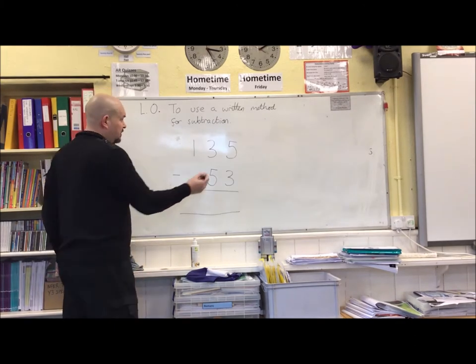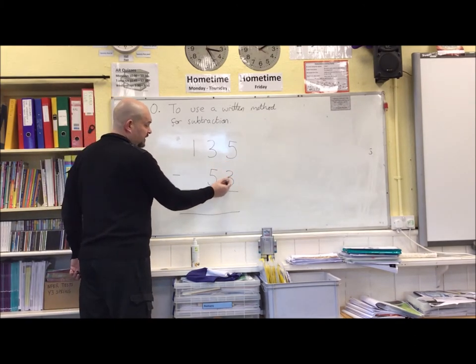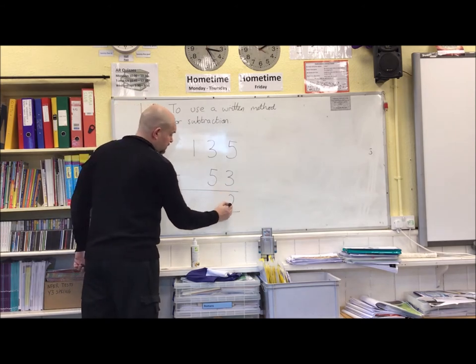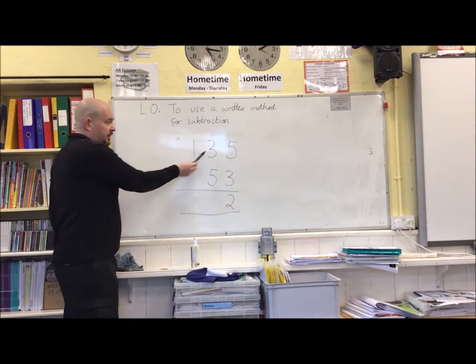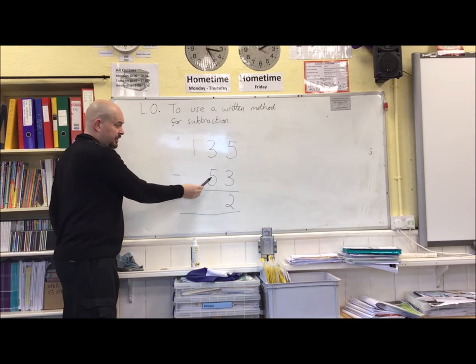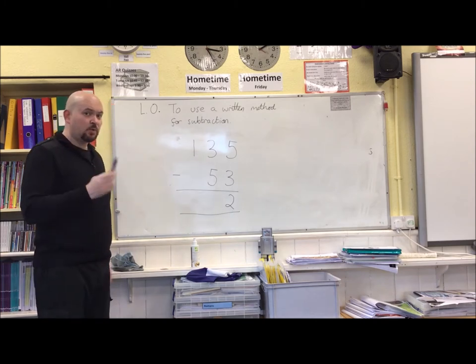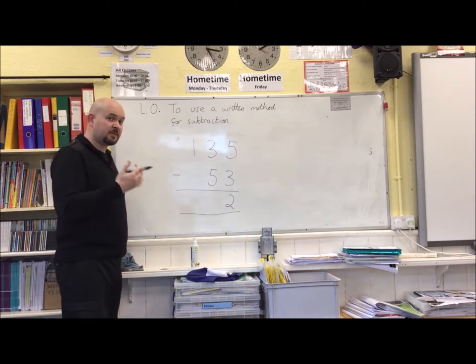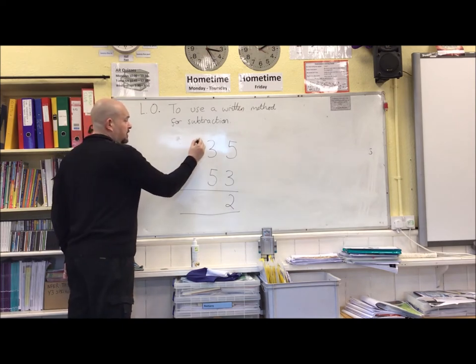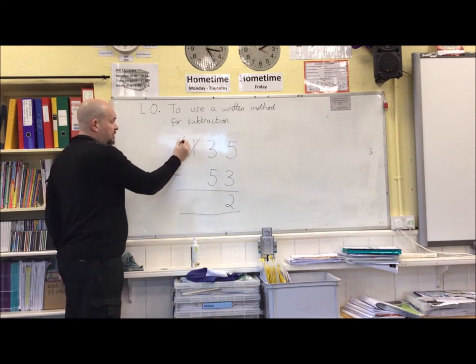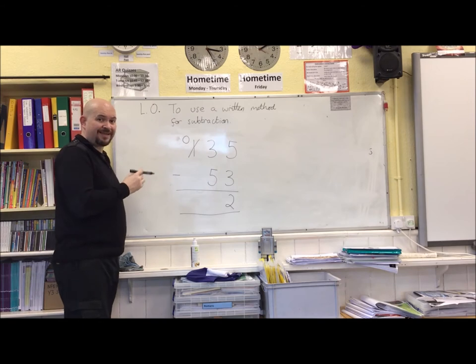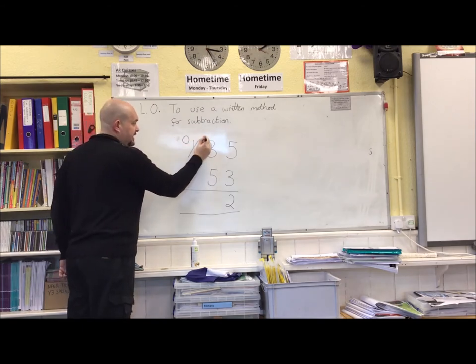This example is a little harder. We've got 5 take away 3 leaves 2. Now in the tens column we have 30 take away 50, which we can't do because 50 is bigger than 30. So we need to borrow from the hundreds column. I'll cross my hundreds out, make that 0, and then borrow that 100 across to the tens column.